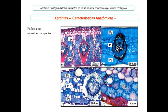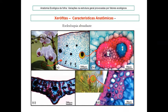Há também um canal secretor. O esclerênquima é abundante: em torno do feixe vascular há muitas fibras, e nas regiões indicadas pelas setas há calotas de fibras. Pensando tridimensionalmente, isso funciona como vergalhões de sustentação. O feixe vascular funciona como vergalhão de sustentação, mantendo a arquitetura foliar.